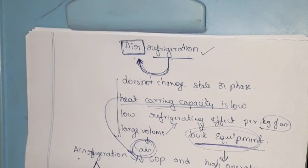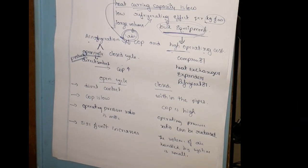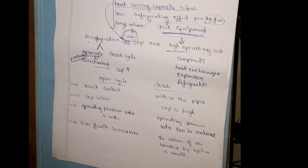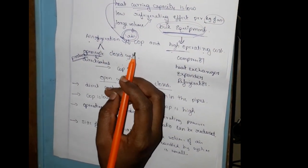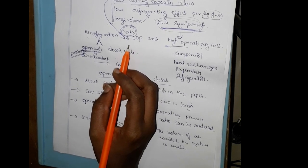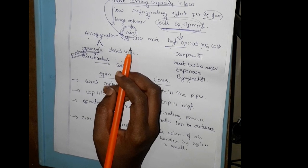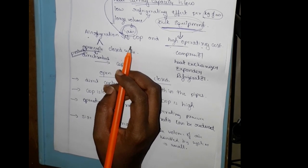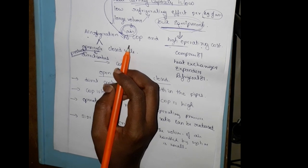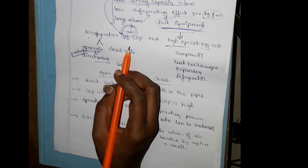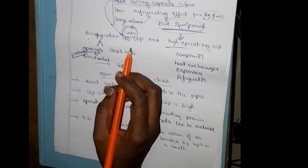Air refrigeration has two types: open cycle and closed cycle. In the open cycle, the air comes in direct contact with the refrigerated space. Heat is absorbed directly, and the cooling effect is achieved.